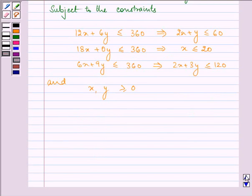Now, let us find out two points for each of these inequalities. Let us first make these inequalities an equation.